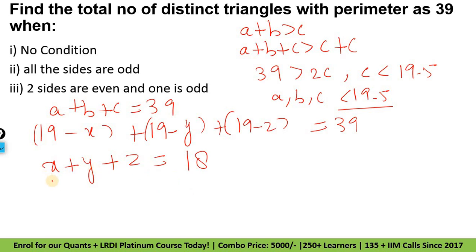Non-negative integral solutions kaise nikalenge? Formula hota hai n plus r minus 1, C r minus 1. Yahaan pe n kya hai? 18. R kya hai? Total terms kitne hain? 3 — x, y, z. So 18 plus 3 minus 1 is 20. We got 20C2.